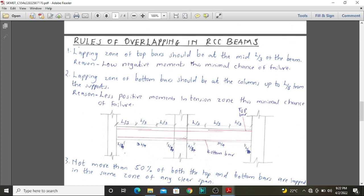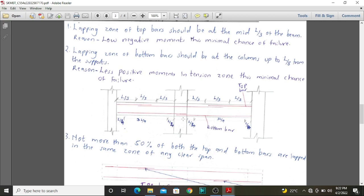But if the bars are congested, you can consider having them within L over 8. That is why we have mentioned that it should be up to a distance of L over 8. But if the bars are congested and we need to have space for our concrete, therefore we can extend the lapping zone to L over 4. Therefore, our bottom bars ought to be lapped at the region around our supports.